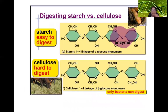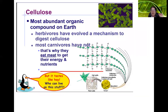Starch is easy to digest. We have the enzyme amylase, which can recognize the bond between alpha glucose monomers, break it, and turn starch into glucose. Cellulose is hard to digest — we do not have the enzyme capable of recognizing the beta glucose covalent bonds. For that reason, we cannot digest cellulose. The only organisms that can digest cellulose are certain types of bacteria. Cellulose is really the most abundant organic compound on Earth, but animals cannot digest it. Herbivores — animals that live exclusively on a plant-based diet — have evolved a mechanism to digest cellulose by living in symbiosis with bacteria that can digest it. Most carnivores have not, and for that reason they need to eat meat to get their energy and nutrients.